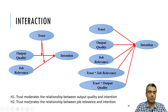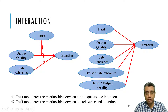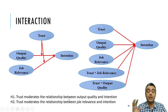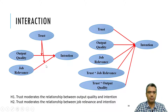The two hypotheses are: H1 — trust moderates the relationship between output quality and intention, and H2 — trust moderates the relationship between job relevance and intention. Usually when you develop the hypothesis, you state whether you expect the relationship to be stronger or weaker. Here is a two-tailed hypothesis — we just say trust impacts the relationship — but you may also have a one-tailed hypothesis where you take a direction, for example stating that trust strengthens or weakens the relationship.